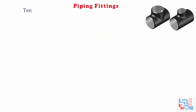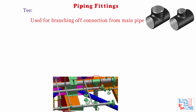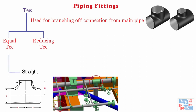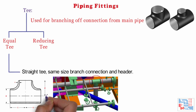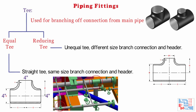Tees are used for branching of connection from the main pipe. There are two types: equal T and reducing T. Equal T, also known as straight T, is used to have a same-size branch connection as the header — all three ports have the same size connection. Reducing T, also called unequal T, is used to have a different (smaller) size branch connection from the header. For example, two header ports may have 4-inch connections while the branch has a 2-inch connection.